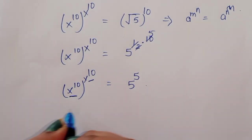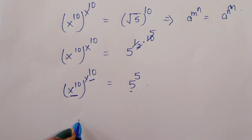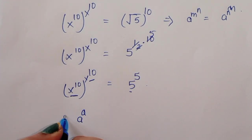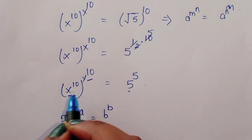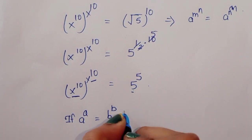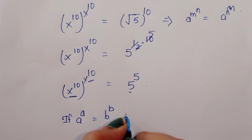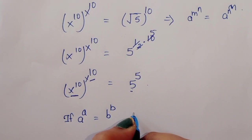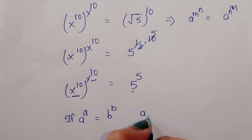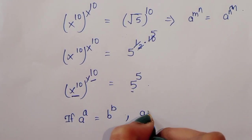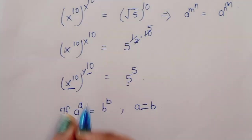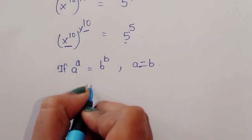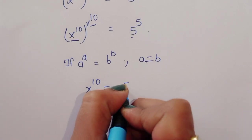Now we have x power 10, raised to x power 10, equal to 5 power 5. Since if a power a is equal to b power b, then a is equal to b. Therefore, we can say x power 10 is equal to 5.